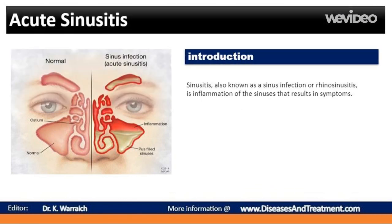Sinusitis, also known as a sinus infection or rhinosinusitis, is inflammation of the sinuses that results in symptoms. Acute sinusitis, or acute rhinosinusitis, causes the cavities around your nasal passages — sinuses — to become inflamed and swollen. This interferes with drainage and causes mucus to build up. With acute sinusitis, it might be difficult to breathe through your nose. The area around your eyes and face might feel swollen, and you might have throbbing facial pain or a headache.